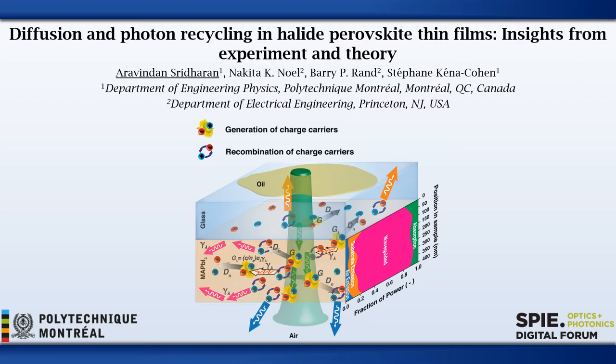These carriers then recombine and produce photoluminescence, otherwise referred to as PL. A fraction of the PL leaves the perovskite layer whereas some is waveguided within. A fraction of this waveguided light is reabsorbed by the perovskite material. This reabsorbed light can further be re-emitted as PL. Successive iterations of these processes which represent the coupled interaction between charge carriers and photons is called photon recycling.